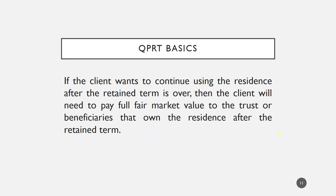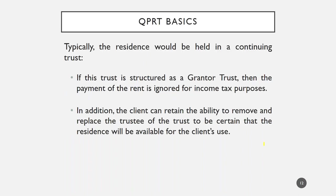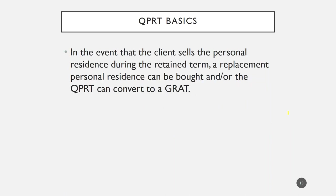Once the QPRT retained term is over, if the client wants to retain use of the residence, the client needs to pay full fair market value rent. If the remainder trust is structured as a grantor trust, the rent will be ignored for income tax purposes, so you're not generating additional income for the client. The rent will also reduce the value of the client's gross estate and reduce estate tax exposure. And because the rent is for fair market value, it's not deemed an additional gift, so the remainder trust can accumulate additional assets without using any more of the client's lifetime gift tax exemption.